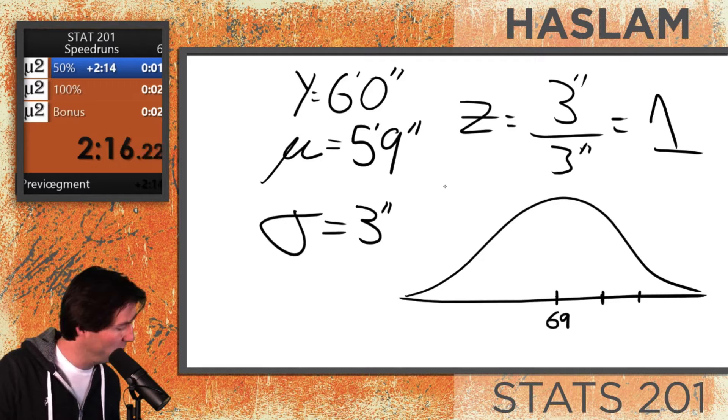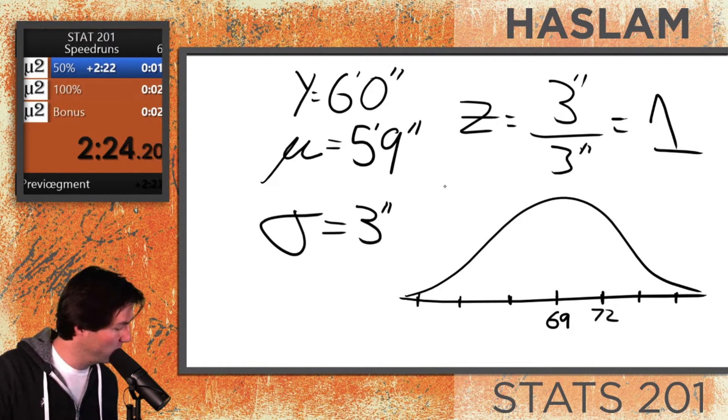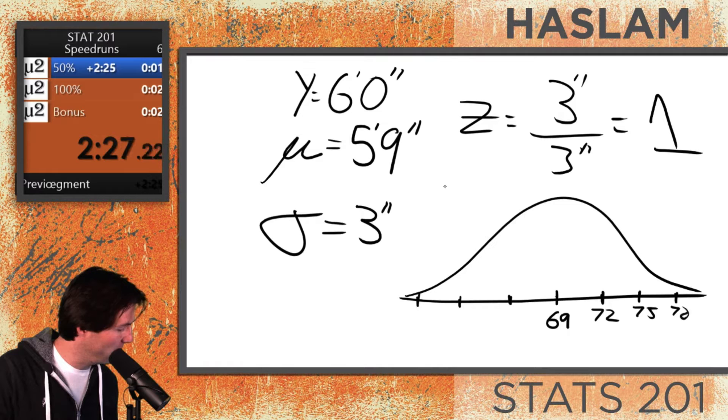We're going to go up one, two, three standard deviations, and down one, two, three standard deviations from there. We're going to put here 72, 75, and 78.